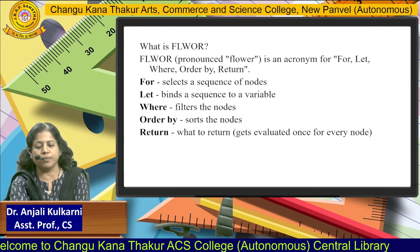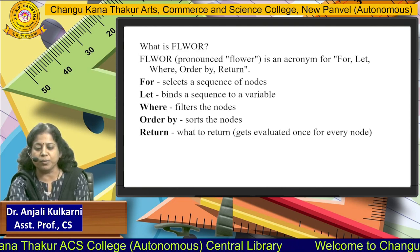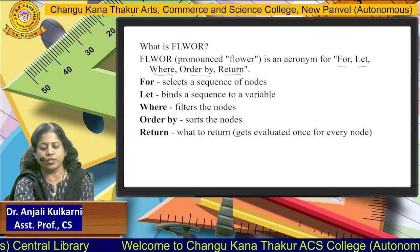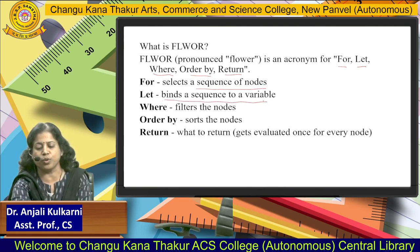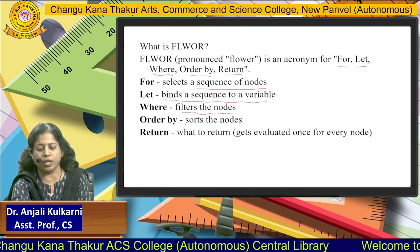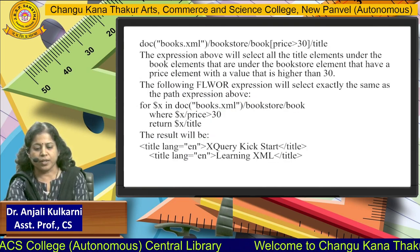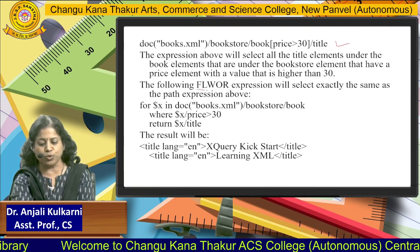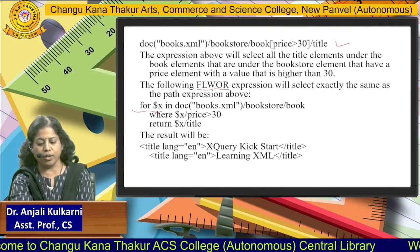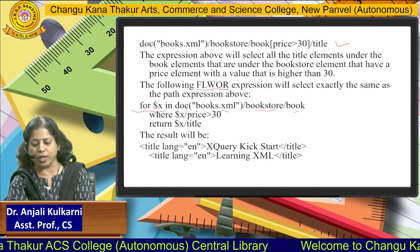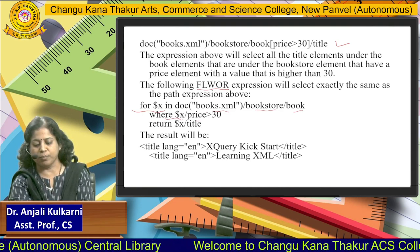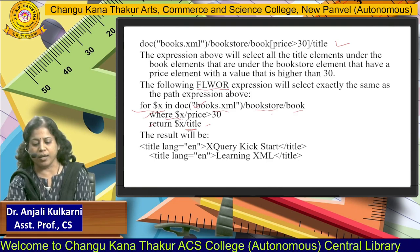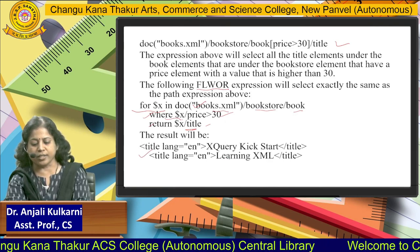Another expression is FLWR — the spelling is F-L-W-R. F means 'for', L means 'let', W means 'where', O means 'order by', and R means 'return'. 'For' selects a sequence of nodes from the XML document; 'let' binds the sequence to a variable; 'where' filters nodes; 'order by' sorts the nodes; and 'return' specifies what to extract. Using the FLWR expression to extract titles with price greater than 30: for $x in doc("books.xml")/bookstore/book, where $x/price > 30, return $x/title. The result is 'XQuery Kickstart' and 'Learning XML'.